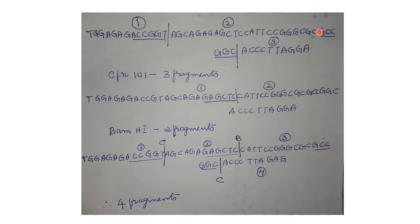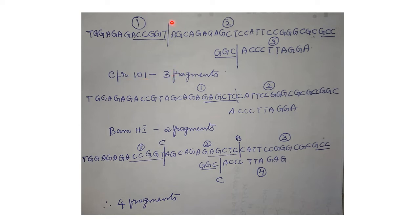Looking at the DNA sequence, CFR101 recognizes RCCGGY. The first site is ACCGGT — flanking CCGG there is A (which is R) and T (which is Y). The second site is GCCGGC — flanking CCGG there is G (R) and C (Y). So CFR101 cuts twice, producing three fragments. For BAMH1, the recognition sequence GRGCYC is found once: GAAGCTC — with A as R and T as Y. BAMH1 cuts once, producing two fragments.